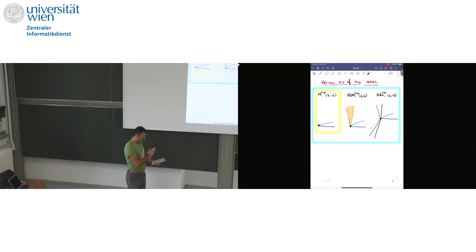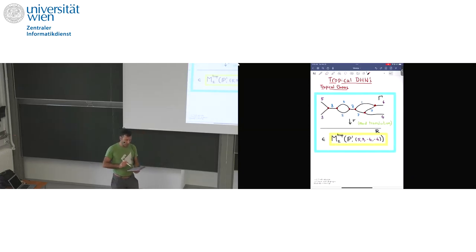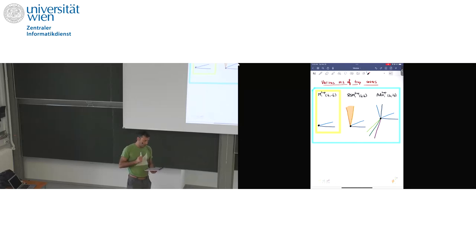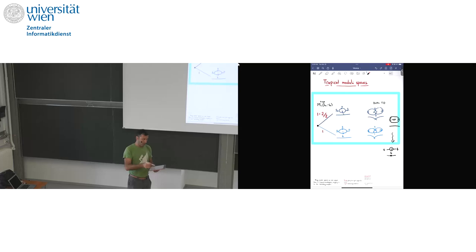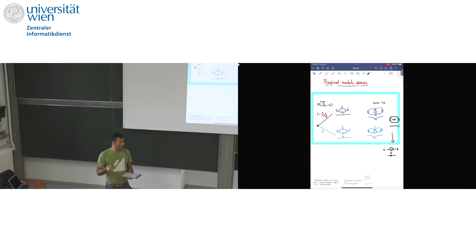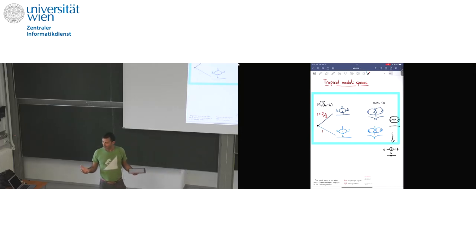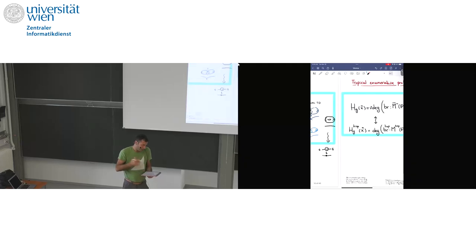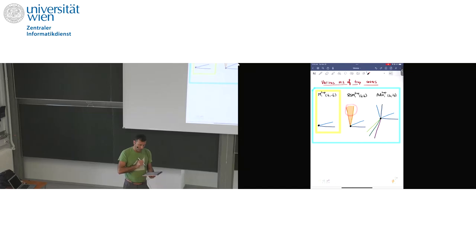A quick detour: this is one possible moduli space of tropical covers, but there are actually a few different variants depending on how you set up the theory. For example, going back to our previous degree four genus one example — if we don't allow any edge with slope zero to contract, then we just get two rays. But if one likes Gromov-Witten theory, stable maps have contracting components. So one could say: tropically, I want to allow graphs that get contracted. Then the same moduli space of genus one degree four maps with two ramified points will acquire a two-dimensional cone.